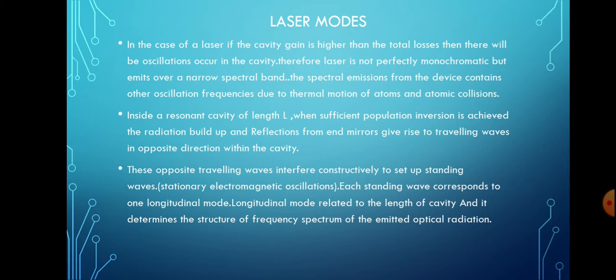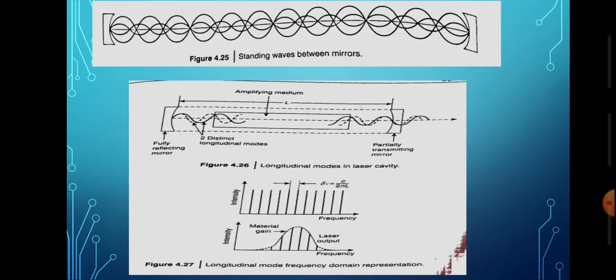The optical radiation within the resonance cavity of the laser diode sets a pattern of electric and magnetic field lines, and this is called the modes of the cavity. Modes are the set of guided electromagnetic waves. We can separate this into two independent sets: transverse electric (TE) and transverse magnetic (TM) field modes.